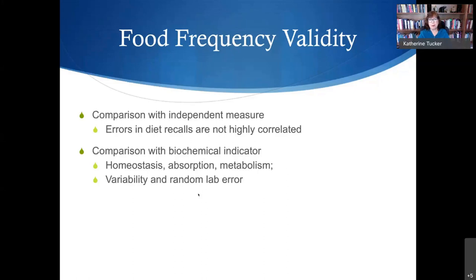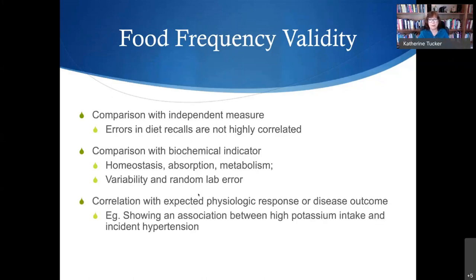There can be random lab error too — there was concern for a while about vitamin D measurements varying across different labs. Another way we assess validity — call it face validity — is asking: does the measure of nutrient, food, or dietary pattern correlate as expected with physiologic response and disease outcome? For example, potassium and hypertension — if your instrument measures those things as expected, that's a good sign it is working well with your study population.